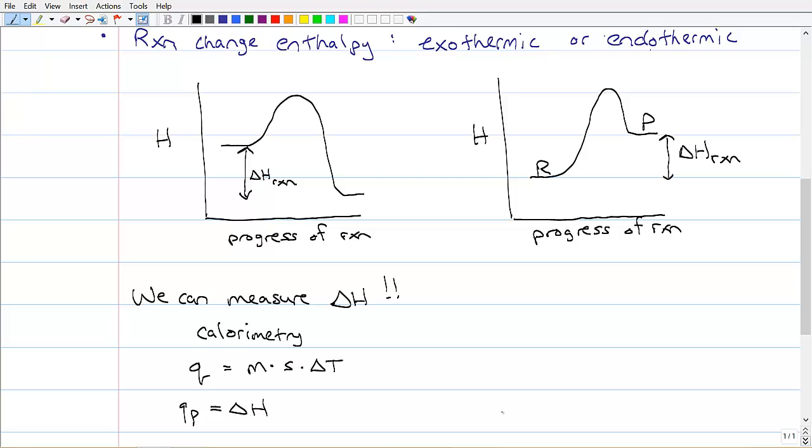And if we do our process at constant pressure, it turns out that Q sub P is equal to delta H. So this is something, once again, that is review. You should probably know this, but in case you don't, under these conditions, when the pressure is constant and we let the energy flow in the form of heat, that energy all goes into changing the enthalpy of our system. That's all it says.